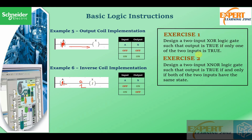Here are some exercises. First, design a two-input XOR gate such that the output is true if only one of the two inputs is true. Second, design a two-input XNOR gate such that the output is true if and only if both inputs have the same states. You can pause the video, try these exercises, and then come back to check your answers.